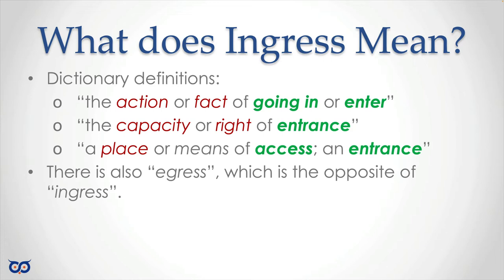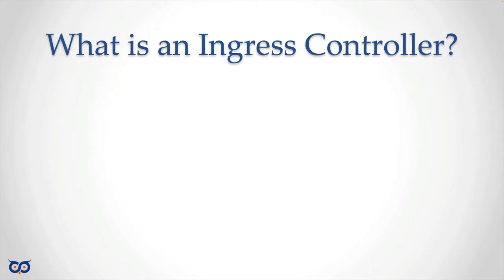When networking people talk about traffic entering a switch or device, they say ingress traffic; if it's traffic leaving that device, they say egress. This gives you a hint that what we're talking about today is traffic coming into our Kubernetes cluster — specifically into our services. We've already seen several ways to get external access with different service types like ClusterIP and NodePort, and this is yet another way. This is not a service type.